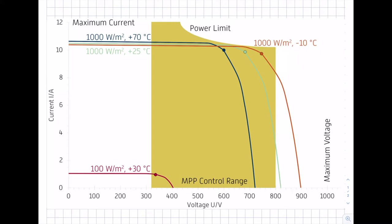The inverter has several technical parameters which limit its capacity. On the one hand, there is a maximum voltage which the inverter can handle. In this case, the inverter has a maximum voltage of 1000 volts, which is the typical value for a modern inverter. If the voltage increases above this value, you might damage the inverter. So we have to check that the number of modules connected in series does not result in a voltage exceeding this limit.